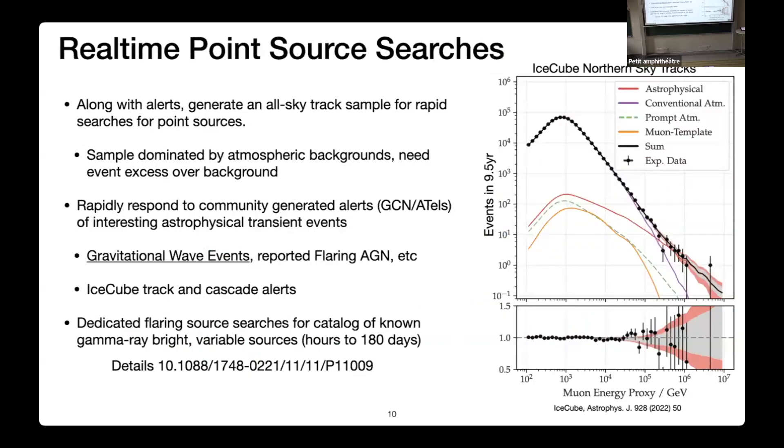I think I'm running out of time, so I'll speed up. Additionally, we have real-time point source searches where instead of just focusing on the highest energy events and tracks that could generate these alerts, we're able to use—if there is this component of astrophysical neutrinos buried in the background, we're able to statistically do statistical tests and see if there's an excess at that point in the sky above the random background of atmospheric neutrinos. We use this to respond to external alerts like gravitational waves, reported AGNs on GCNs and ATels, and then our own alerts. We do a follow-up to look for additional neutrinos from the direction of the alert.